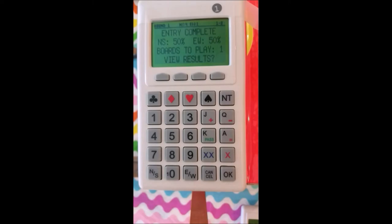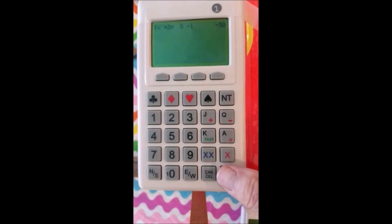And it says entry complete. It also gives you a percentage on the boards that have been played so far. So far we've only played one board, so it's 50-50 and that doesn't really mean anything. Hit OK. It'll show us what other boards have done. No other boards. It takes us to board two.